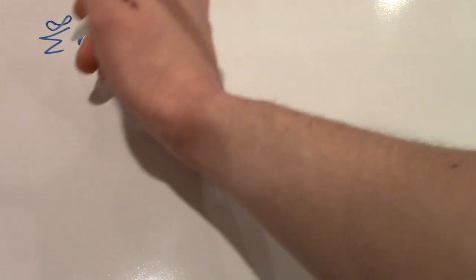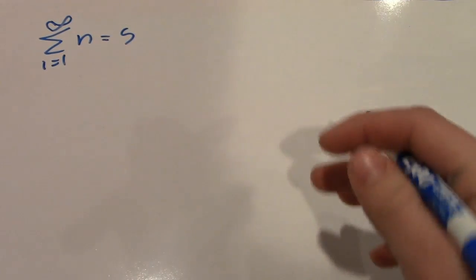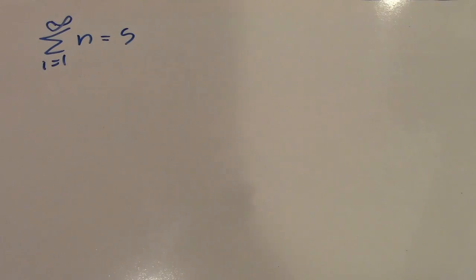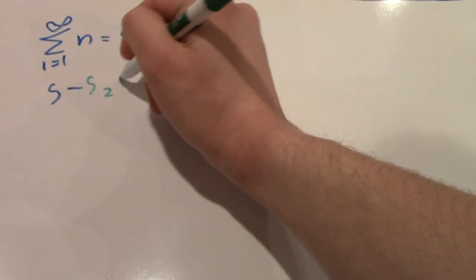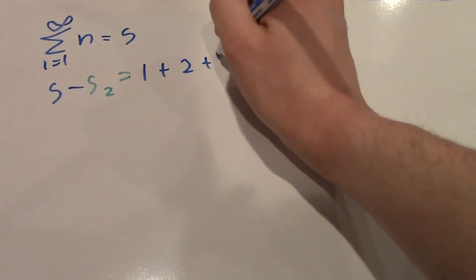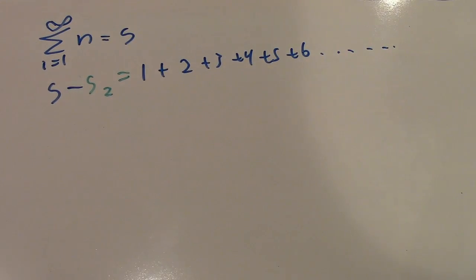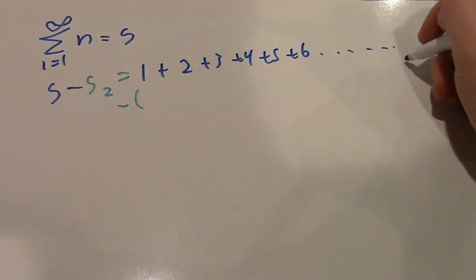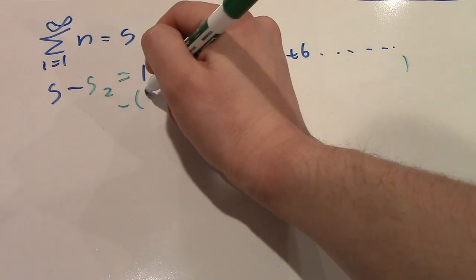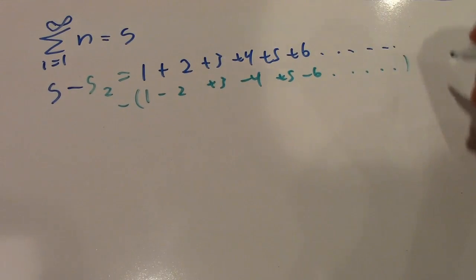So, I wrote our main sum initially as the sum of the integers n from 1 to infinity. Now, I'm going to rewrite this as S, just because it's a lot simpler and makes things easier. Now, what we're going to do is we're going to take our main sum and subtract it from our second sum. So, just writing this out so you can see what's going on, we have our main sum, which is 1 plus 2 plus 3 plus 4 plus 5 plus 6, and so on. And then we had our second sum, which we are subtracting. So, we have a minus, and then the second sum will go in parentheses. So, our second sum was 1 minus 2 plus 3 minus 4 plus 5 minus 6, and so on, off to infinity.